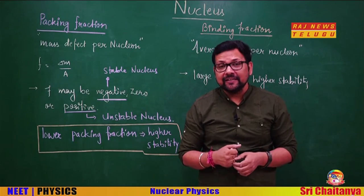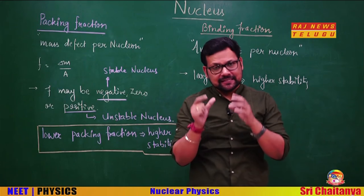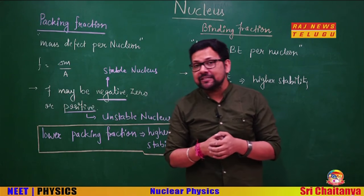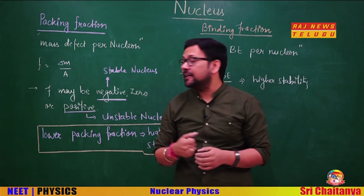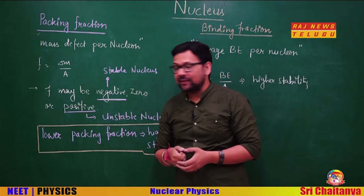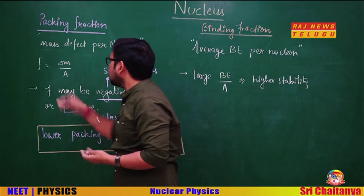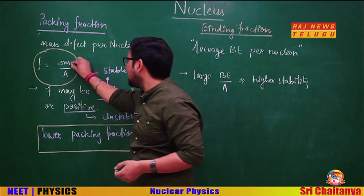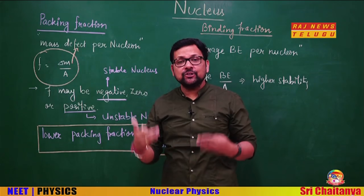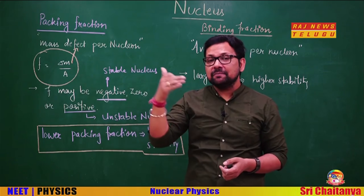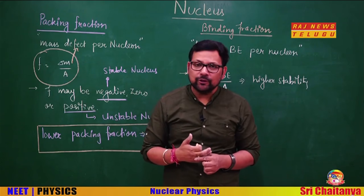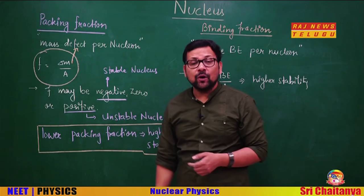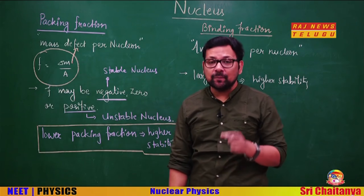Since there is a mass defect and the nucleus is stable because some mass has been lost as energy, let's talk about nuclear stability. The first concept is packing fraction, defined as Δm / A — that is, mass defect per nucleon, where A is the mass number (number of nucleons). This gives an idea about the stability of the nucleus.